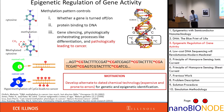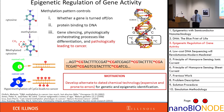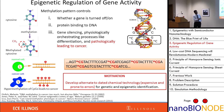A recent result showed that hypermethylation of a certain gene called the GSTP1 gene was found in more than 90% of prostate cancer patients.